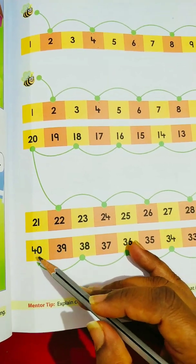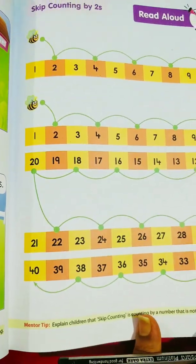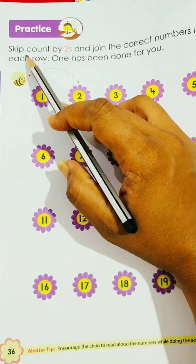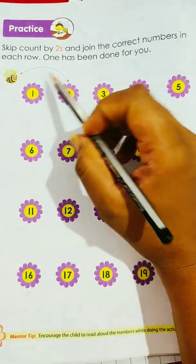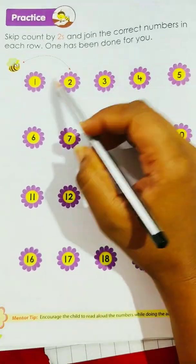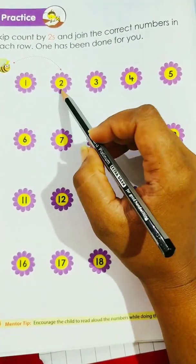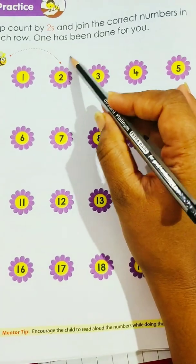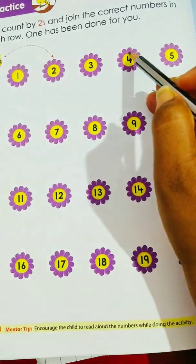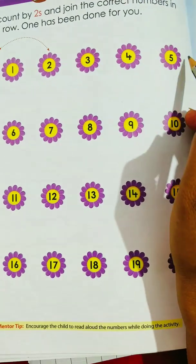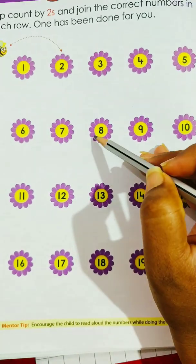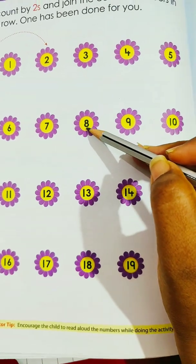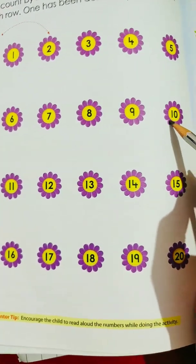You can continue the numbers — after forty, skip forty-one and it is forty-two. Now let's do a small activity for the children. Turn the page, next page. Skip count by twos and join the correct numbers in each row. One has been already done for you. Honeybee from zero skips two steps — one and it jumps to two. From two, draw an arrow mark, skip three and jump to four. After four, skip five and jump to six. After six, skip seven and jump to eight. After eight children, skip nine and jump to ten.